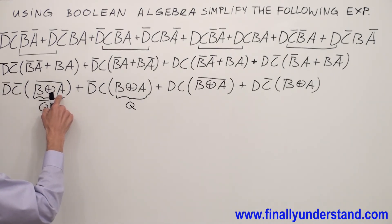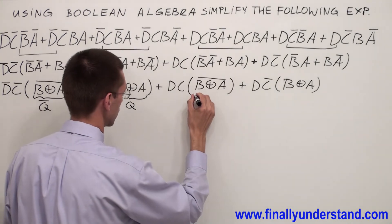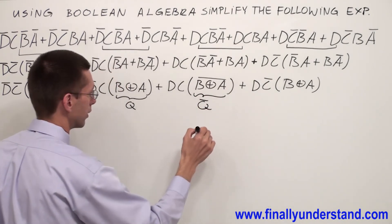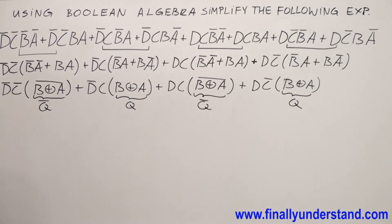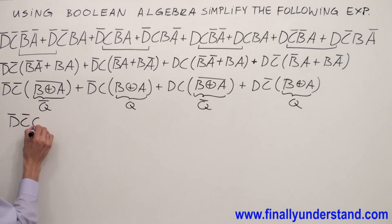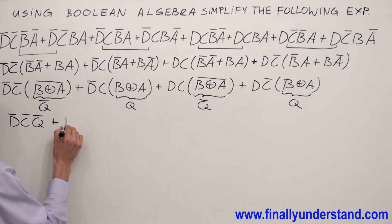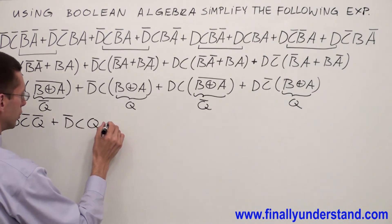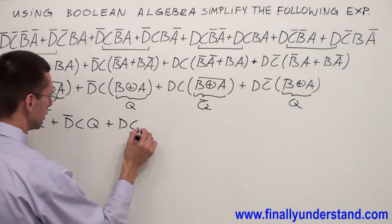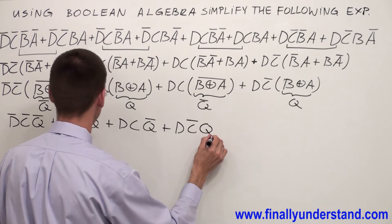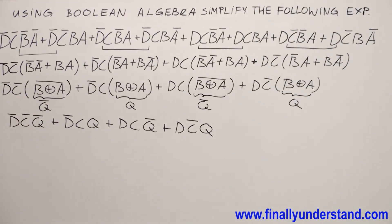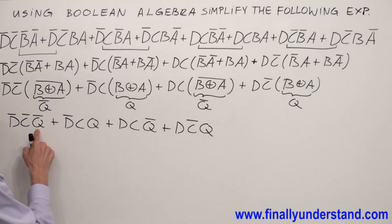B exclusive NOR with A we called Q̄, so this term is Q̄, this one is Q, and this one is Q. Let me rewrite this expression one more time: D̄C̄Q̄ or D̄CQ or DCQ̄ or DC̄Q.